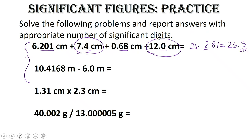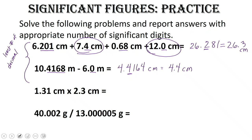Let's look at the second problem. When you put all of these digits into your calculator, you end up with 4.4164 centimeters. Our first value has four decimal places, our second value has one decimal place — so our answer must have just one decimal place. We round this off to the first decimal place. For addition and subtraction, you round to the least number of decimal places, because if we're in the ones place, you can't go past the ones place.